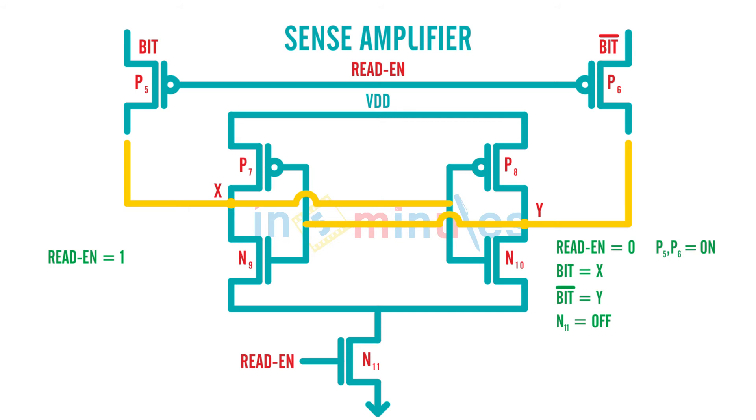But before elimination, if you remember, what they have done is they have passed their value, which was nothing but bit to X and bit bar to Y. And because read enable is 1 now, N11 is also on. So what do you think, what values have they passed to X and Y? That's correct.